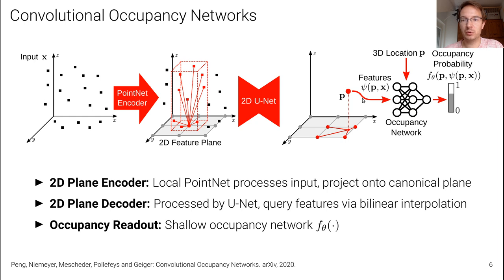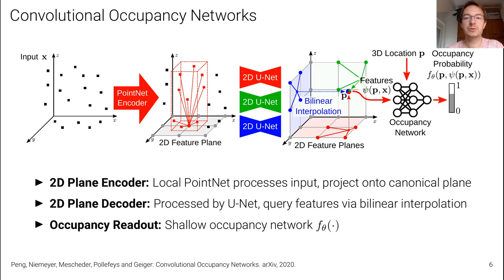Now we have richer local features, which means we need a more shallow occupancy network that takes a 3D location and the features as input and produces an occupancy probability. We can also do this for multiple canonical planes — for instance three canonical planes with three different UNets — and simply concatenate the features from all three planes.